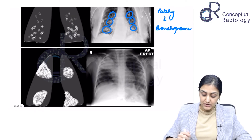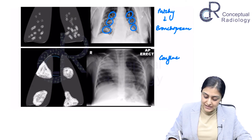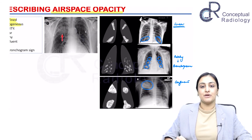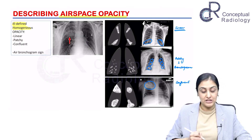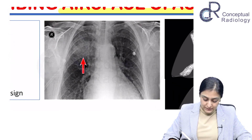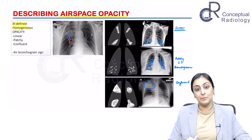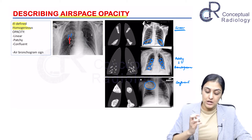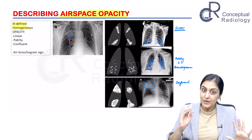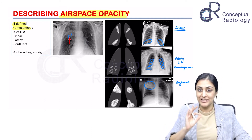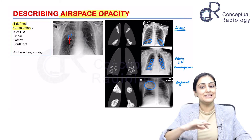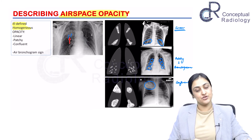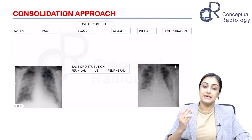Finally, the most typical one is your confluent opacity — linear, patchy, or confluent — where you have these multifocal confluent opacities, as seen here in the right upper zone. If you see the air bronchogram sign — the black bronchi coursing through the opacity — you can comment on it. This further tells you that it is indeed a consolidation. So you describe: ill-defined homogeneous opacity, linear, patchy, or confluent, with air bronchogram sign, and the impression is likely a consolidation.